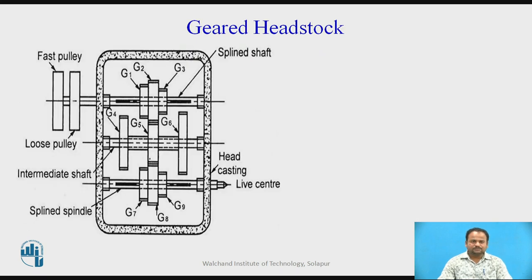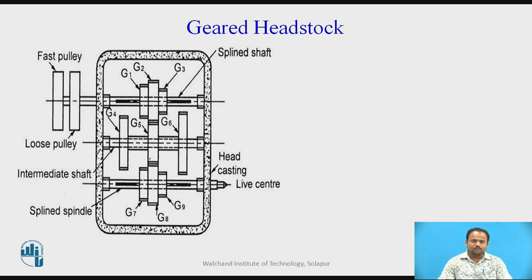Geared headstock. This geared headstock is used instead of the speedcone pulley. At the left-hand side, you can see the fast and loose pulley. Whenever a belt is connected between the fast pulley of the gear headstock and the motor, motion is transmitted from the motor to the gear headstock. Whenever the belt shifts towards the loose pulley, the loose pulley continues rotating but no gear inside the headstock rotates.